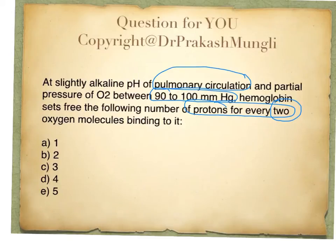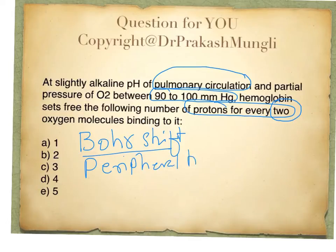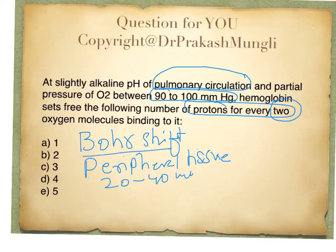Let me first explain the Bohr effect, also called the Bohr shift. The Bohr shift occurs in the peripheral tissue. In peripheral tissue, the partial pressure of oxygen is 20 to 40 mmHg.